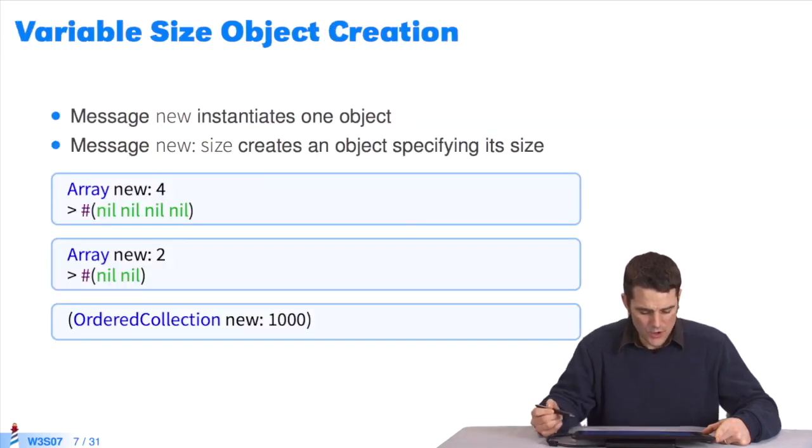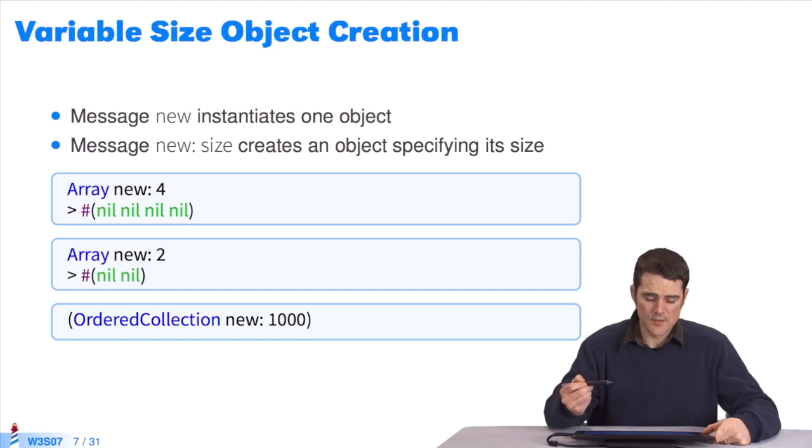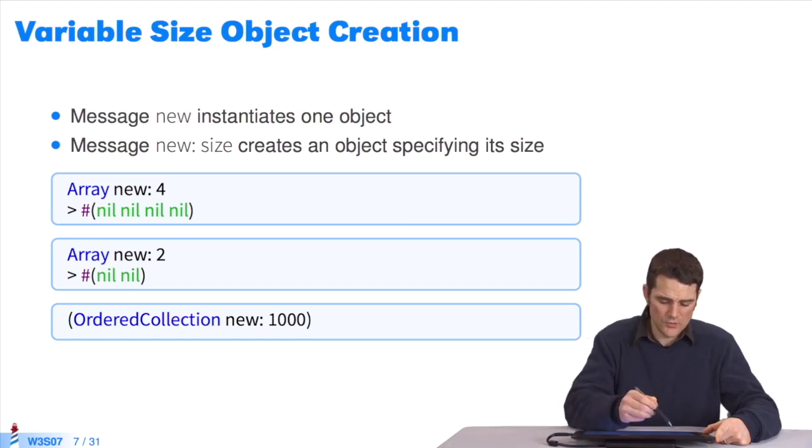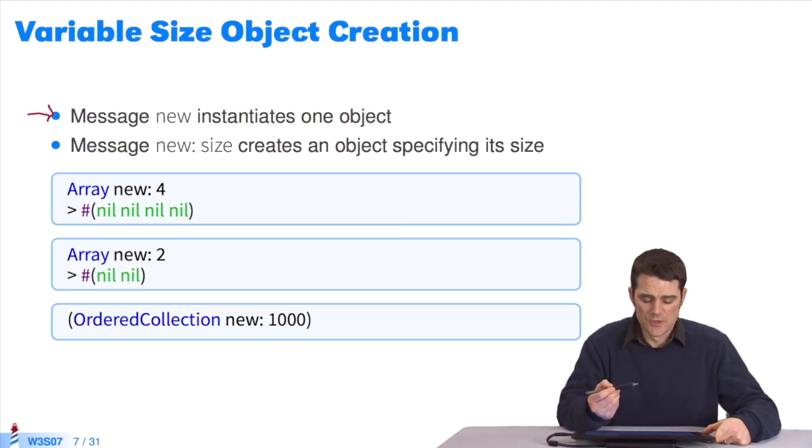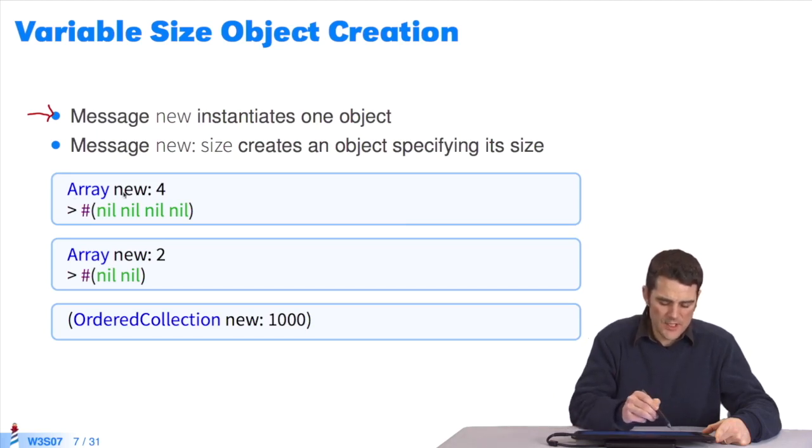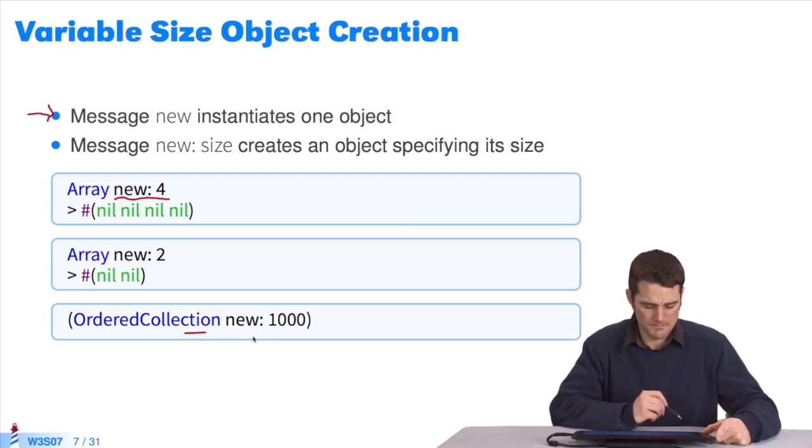Let's start with an example. I want to create a collection in Pharo. I'll just select the class I'm interested in and send the message NEW to instantiate this class. First option: I use NEW. Second option: I can't use NEW directly. I want to specify the size of the collection. I could send NEW:. I create a size 4 or size 2 array. It also works with OrderedCollection. I could create one of size 1000.